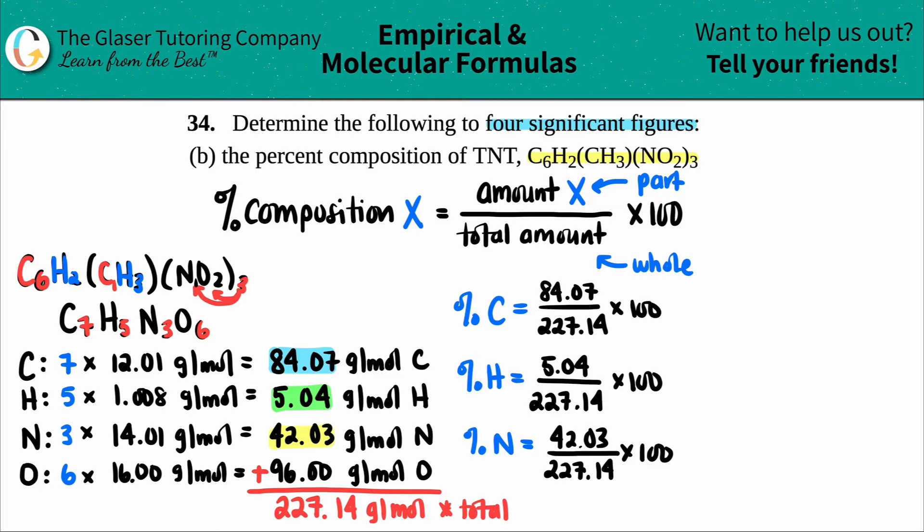And then, gosh, where am I going to put oxygen? I guess I'll put oxygen up here. The percent of oxygen equals, this is the total amount for oxygen, the 96. So I'll say 96.00, all divided by the total molar mass of 227.14, and then times it by 100.